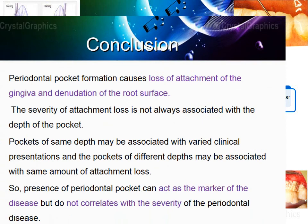To conclude: periodontal pocket formation causes loss of attachment of the gingiva and denudation of root surfaces. The severity of attachment loss is not always associated with the depth of the pocket — clinical attachment level better describes the severity of periodontal destruction. Periodontal pockets of the same depth may have very different clinical presentations, and pockets of different depths may be associated with the same amount of attachment loss. The presence of a periodontal pocket can act as a marker of disease but does not directly correlate with the severity of periodontal disease.